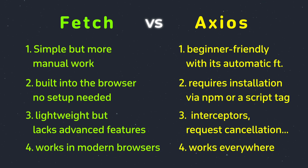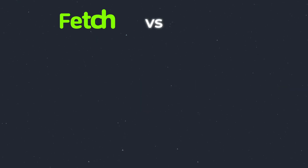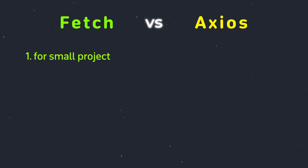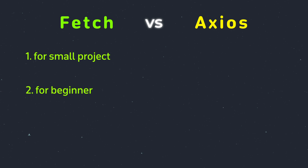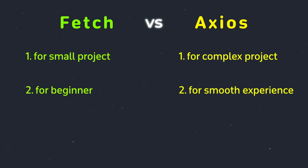So which one should you choose? As a beginner, if you're working on a small project or just learning, start with fetch — it's a great way to understand how HTTP requests work under the hood. If you're building something more complex or want a smoother experience, go with axios. It will save you time and frustration.